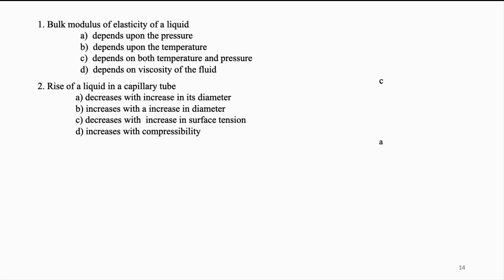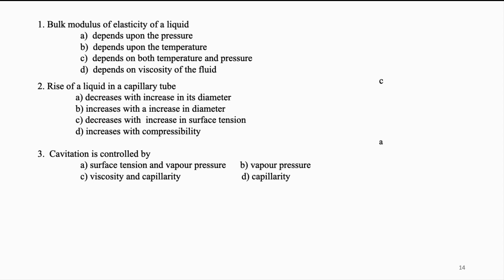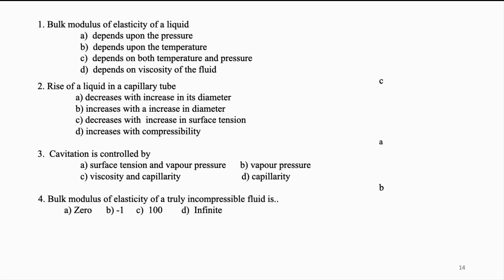Cavitation is controlled by: (A) surface tension and vapour pressure, (B) vapour pressure, (C) viscosity and capillarity, (D) capillarity. The answer is B. Bulk modulus of elasticity of a truly incompressible fluid is: (A) 0, (B) −1, (C) 100, (D) infinity. Truly incompressible means whatever the change in pressure, volume change is zero — dV = 0 — so the answer is D, infinity.